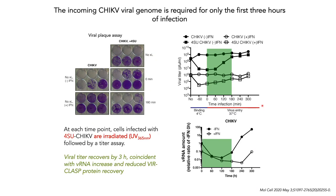For this talk, I will focus on our results with the emerging alphavirus chikungunya. One of the first things we did was to ask how long during an infection is the incoming viral genome essential. We reasoned that if we were to irradiate viruses either before infection or in the first few hours, we would cause irreversible cross-links to the primary genome, greatly affecting replication. We predicted there would be a time point when irradiation would have no effect on downstream viral events, since presumably the incoming genome is no longer required. Using viral titer as a readout, we show that the incoming chikungunya genome is required for only the first 3 hours of infection, which is concomitant with the detection of viral RNA increase.